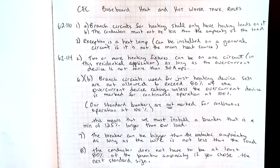Branch circuits used for heating devices are not allowed to exceed 80% of the overcurrent device rating, unless the overcurrent device itself is marked for continuous operation at 100%. Our standard breakers in Canada are not marked for continuous operation at 100%. This means that we must install a breaker that is a minimum of 125% larger than our load.